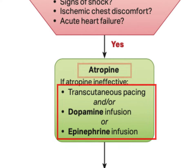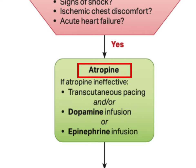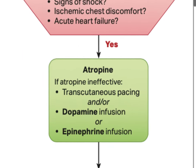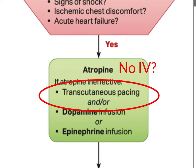Atropine is a reasonable, safe, and appropriate choice for most symptomatic bradycardias. The dose is a 1mg bolus, which can be repeated every 3-5 minutes to a maximum total dose of 3mg. At this stage, clinical judgment is expected. If you do not have IV access and gaining access is difficult, and your patient is significantly unstable, it may be very appropriate to move directly to pacing prior to attempting atropine.